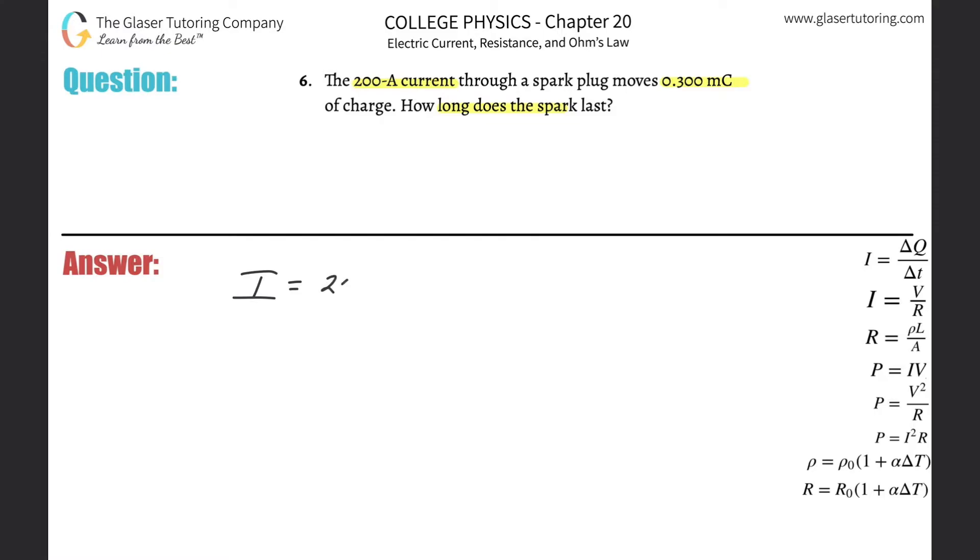The current is going to be 200 amps. The charge that they gave us is 0.3 millicoulombs but we need that in coulombs. So simply just convert that. You have to multiply that by 10 to the minus three. 0.3 times 10 to the minus three. That's now in terms of coulombs.